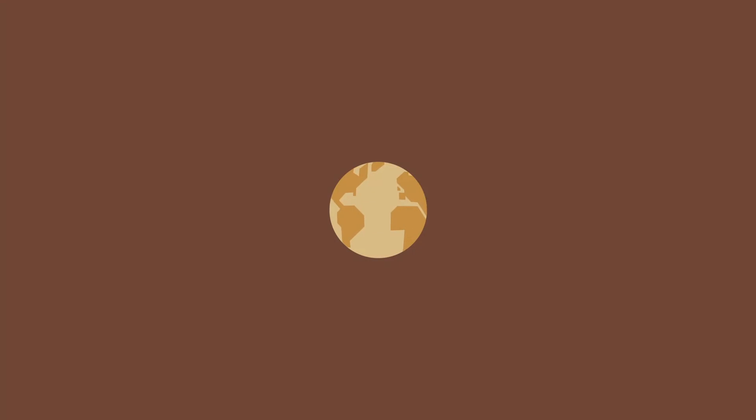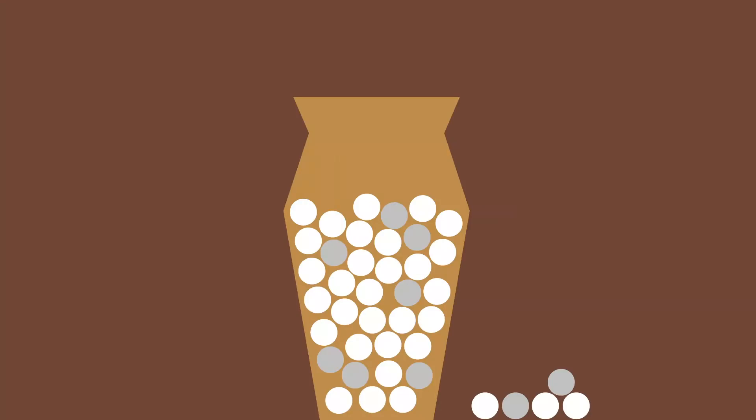One kind of metaphor that maybe shows why future technological advances could be a source of a significant fraction of the existential risks we will face is this idea of thinking about human history as the process of extracting balls from a giant urn.